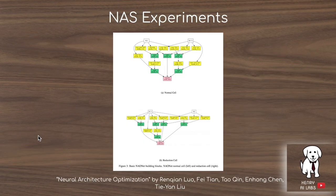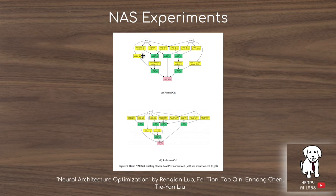In their experiments with generative teaching networks and neural architecture search, they use a similar search space to the neural architecture optimization paper. The macro architecture defines how normal and reduction cells are arranged in the overall network, and the neural architecture search searches for micro cells — configurations of different operations like 3x3 convolutions or identity connections between input nodes — that compose the overall architecture.